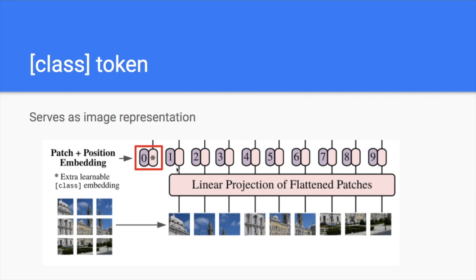After the transformer, you have a vector for each patch. You always use the classification token's representation to represent the whole image. I'll also be publishing a BERT explained video — I'll put it in the description below, probably a week later. Then you use this vector to perform your classification task.